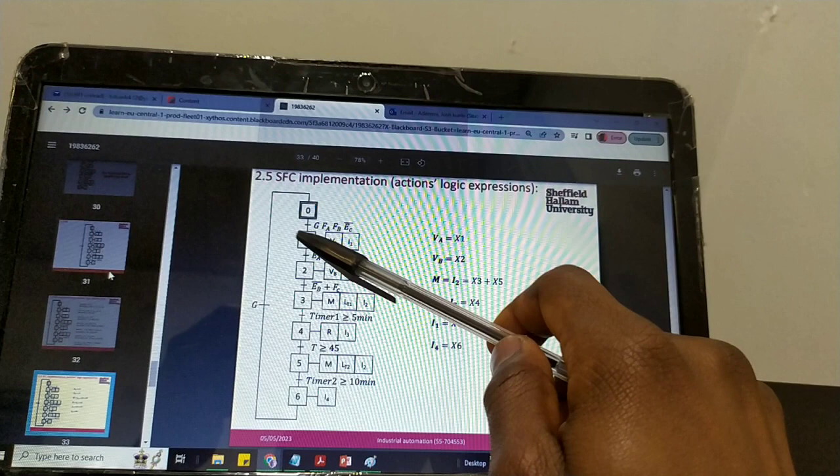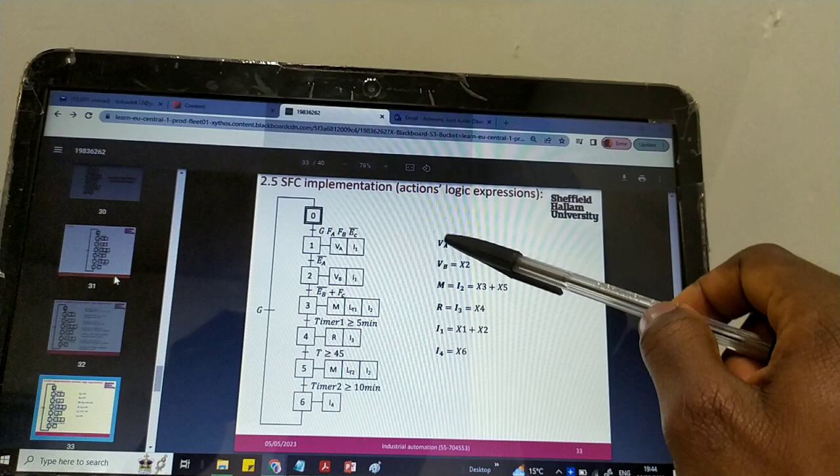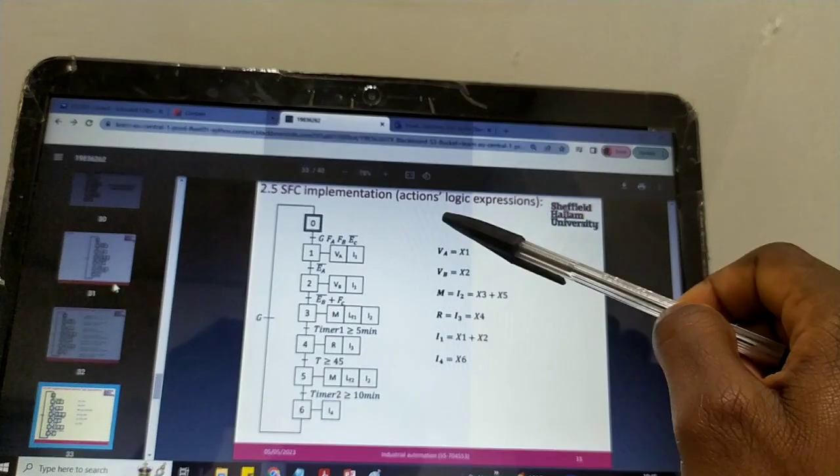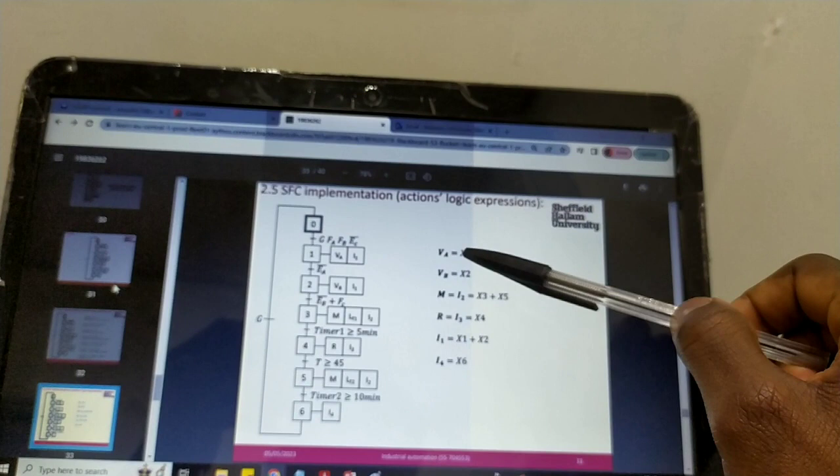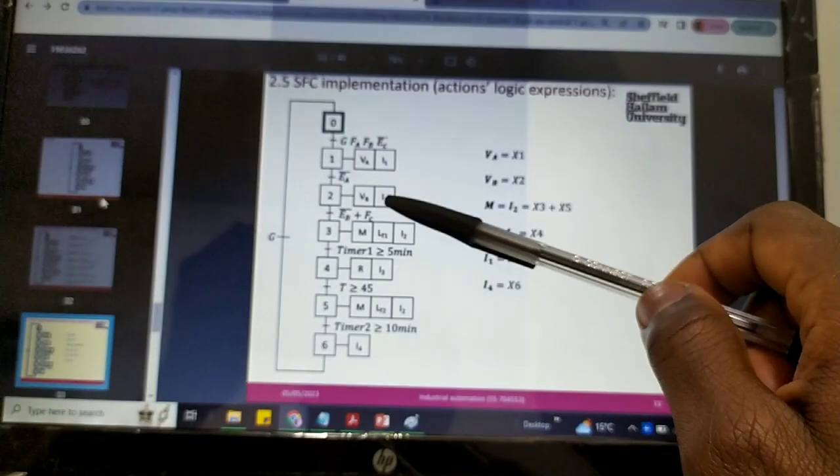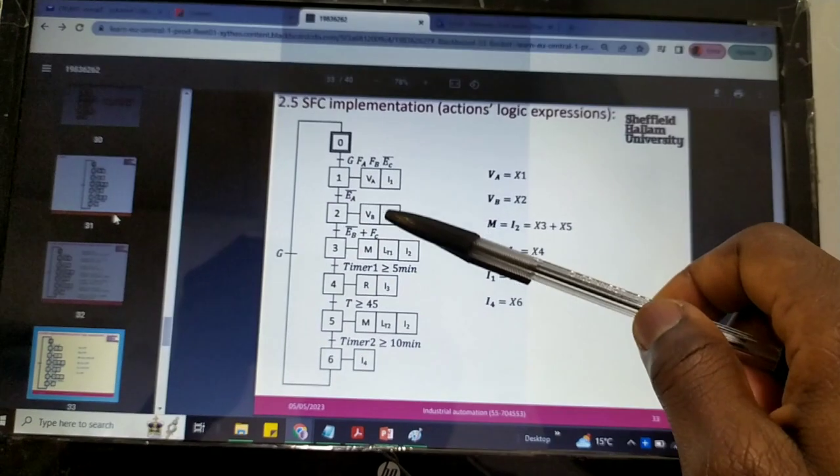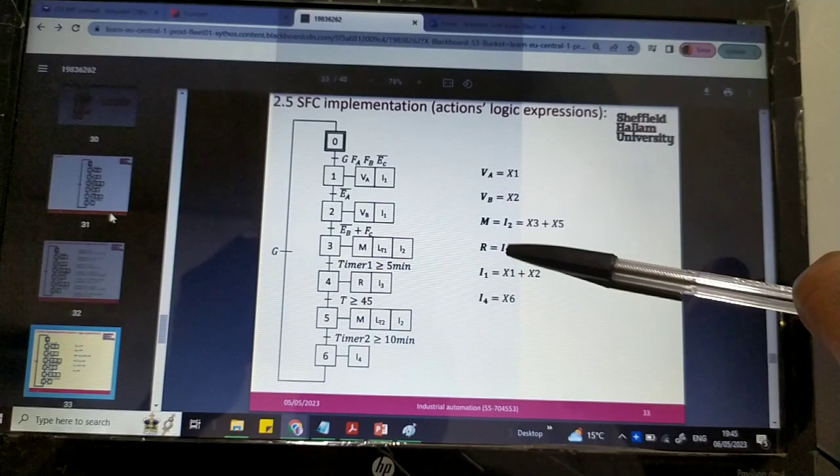This time we're writing outputs in terms of steps. VA only appears here, so it's equal to state 1. For I1, it appears in two places, which is why you see I1 is state 1 or state 2—just the two places where it appears.